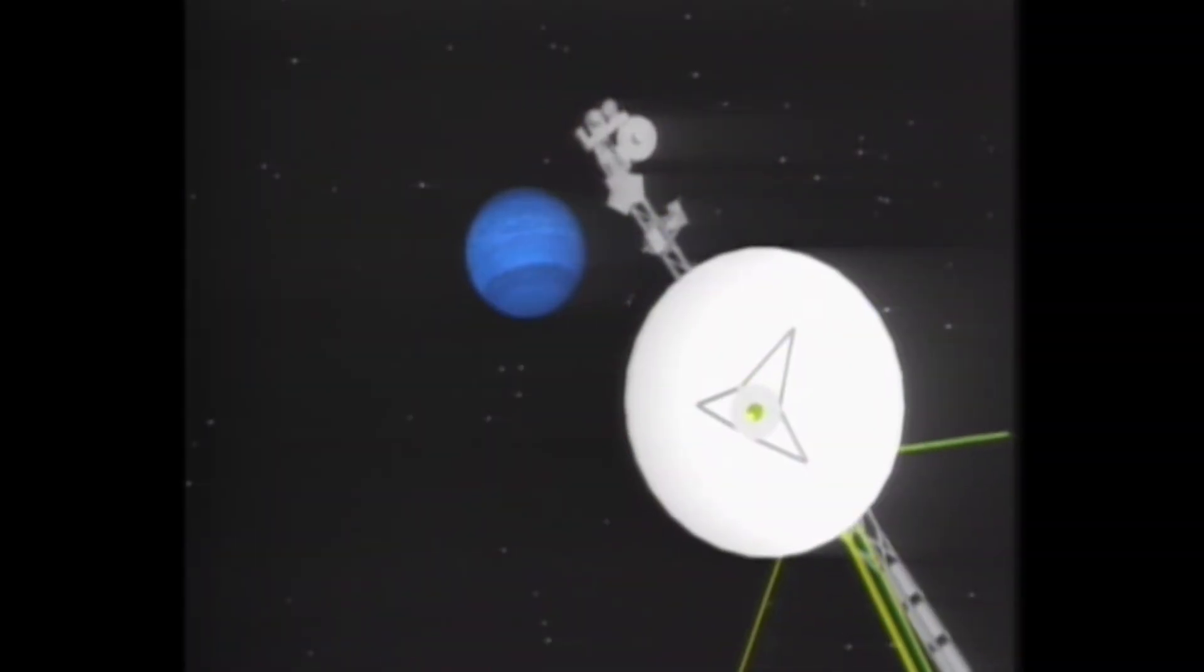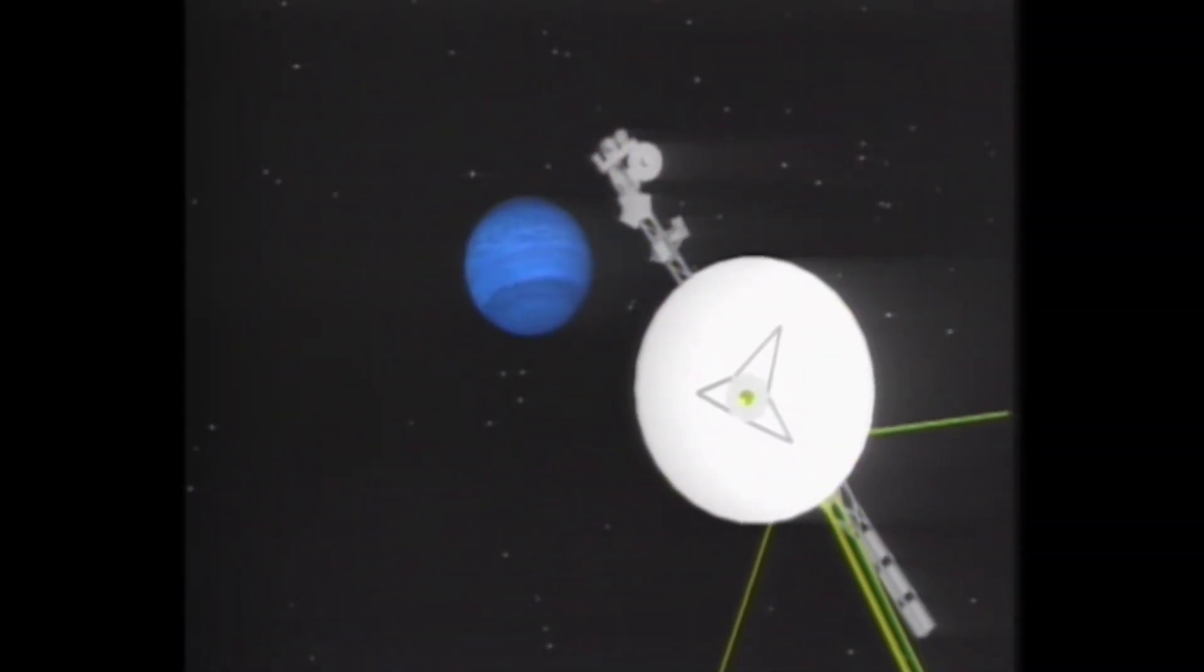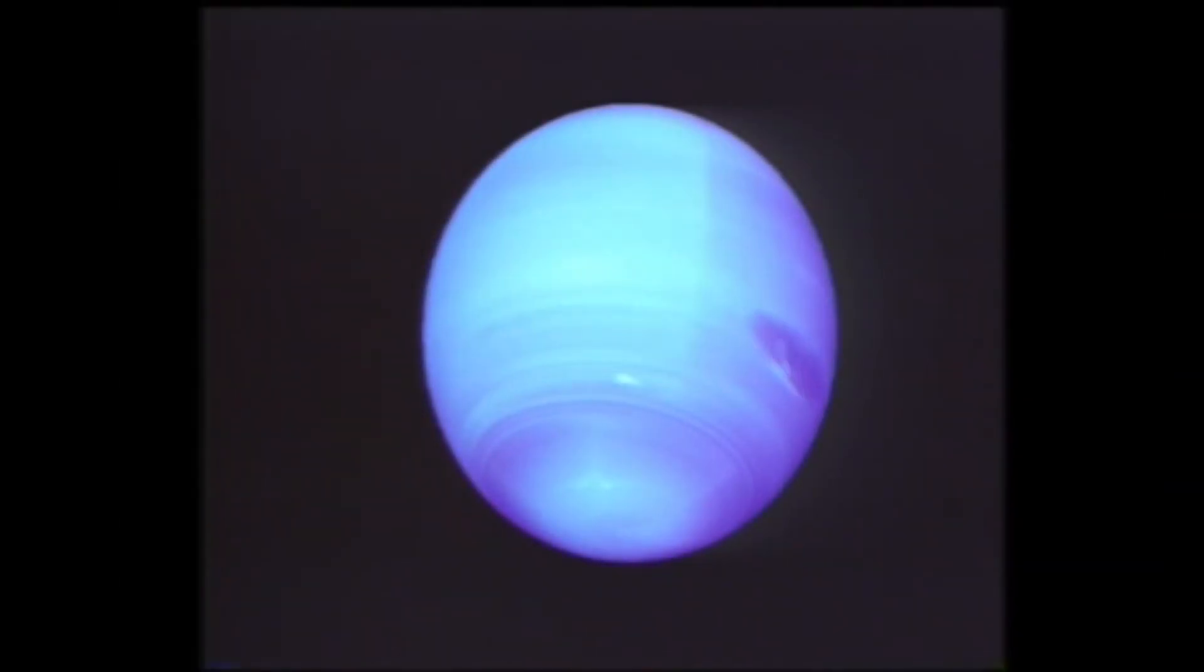The first and only spacecraft to visit Neptune was NASA's Voyager 2 in 1989. It discovered two immense dark storms turning through Neptune's thick blue atmosphere.